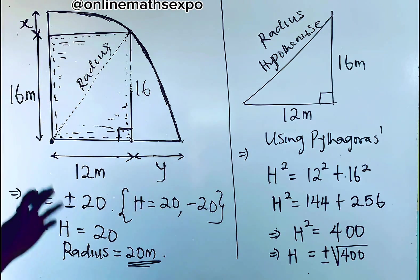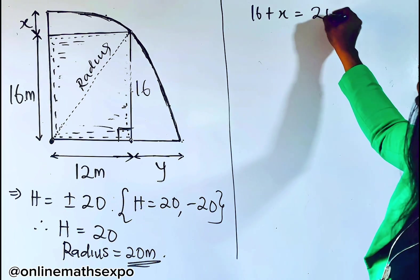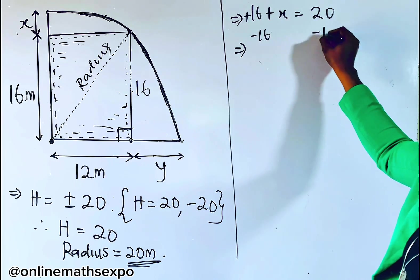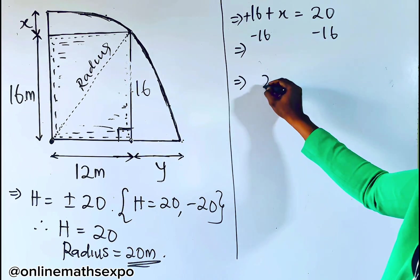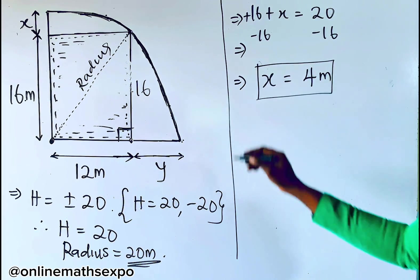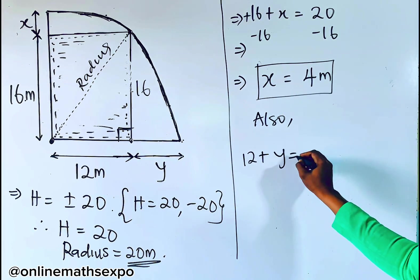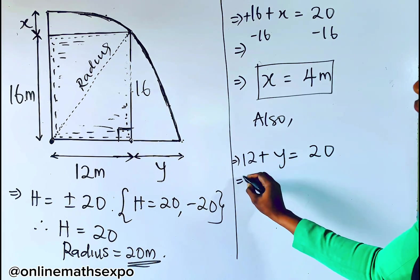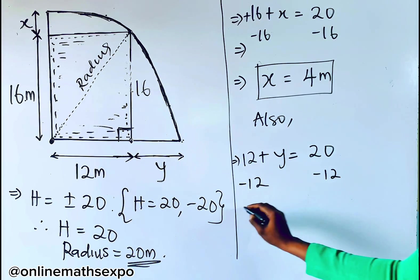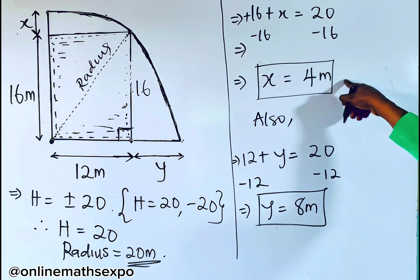Now to get x: we have 16 + x = 20. Subtracting 16 from both sides gives x = 4 meters. For y: we have 12 + y = 20. Subtracting 12 from both sides gives y = 8 meters.